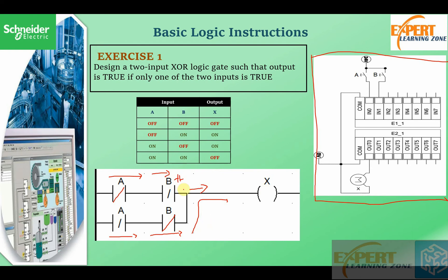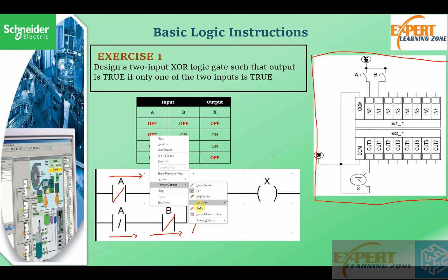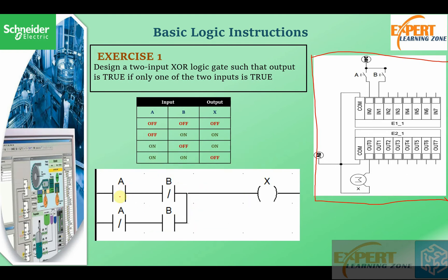For the last case, both inputs are on. When A is on, this A contact becomes closed, and the corresponding A address becomes open. B is also on so this B contact becomes closed and this B contact becomes open. Logic will flow to a point and then be stopped — it will never reach the output, so the output will always stay off.